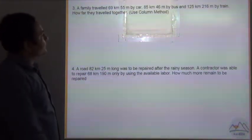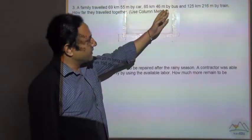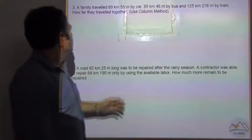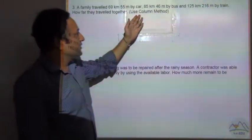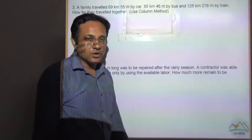Now again we have question number 3. A family traveled 69 km 55 m by car, 85 km 46 m by bus, and 125 km 216 m by train. How far did they travel together? Use column method. Now specially it is written, use column method.